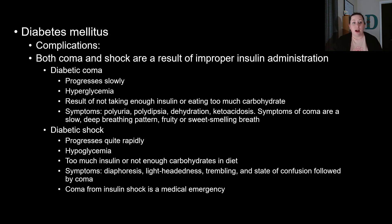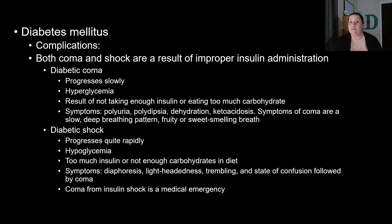A patient can also go into diabetic shock, which happens very quickly — it's a rapid progression. This occurs when you overcompensate for high sugar levels, causing your glucose to drop greatly, resulting in hypoglycemia. This normally happens when someone gives themselves too much insulin or cuts out carbohydrates altogether. Symptoms include diaphoresis — excessive sweating — lightheadedness, trembling, and a state of confusion. This is ultimately followed by a coma, but it comes on much faster. The coma from insulin shock is a medical emergency that needs to be addressed right away.